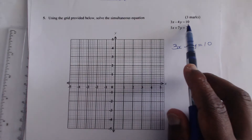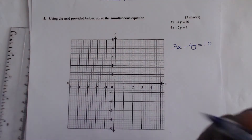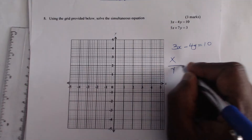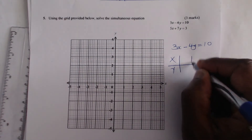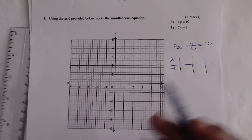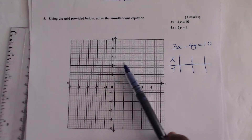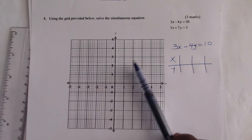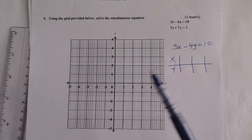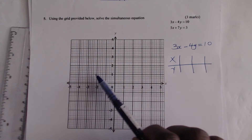For 3x minus 4y equals to 10, how do you draw a line given the equation? You just need at least two points. You can use a third one for confirmation. So choose any random points. In choosing the points, it's good to look at the graph and the size of the graph. Don't choose very big numbers that will not fit when you get the values. Just look at values that are not very big and not very small, also considering the scale.